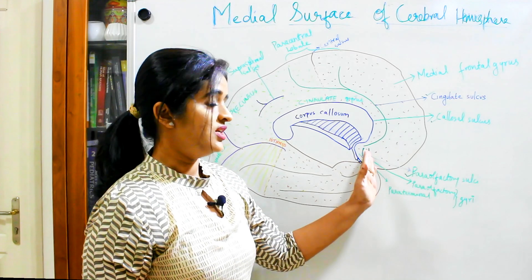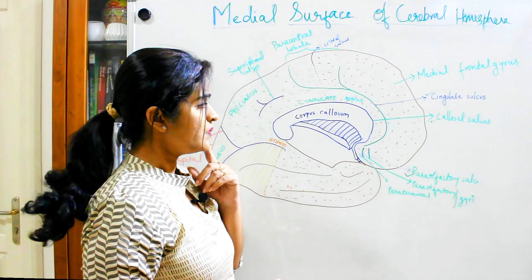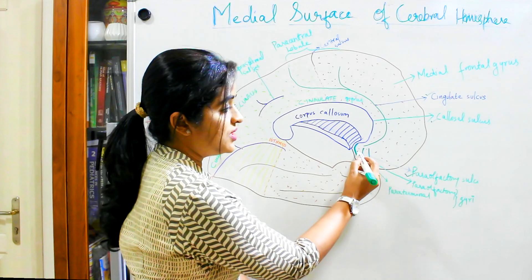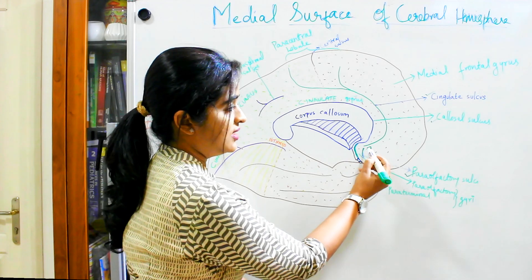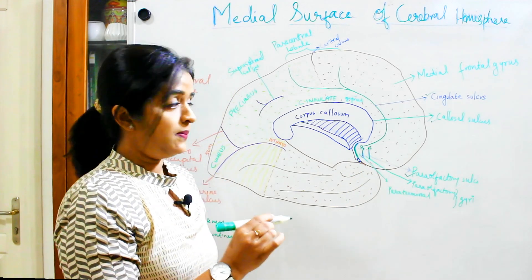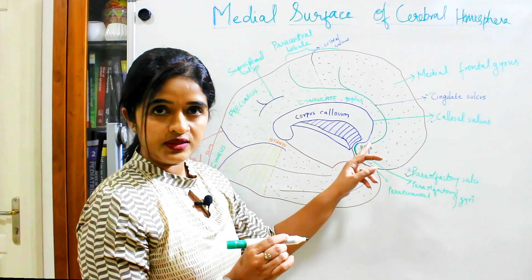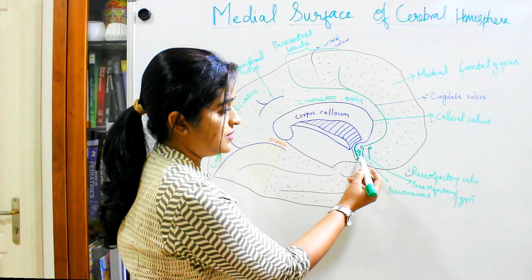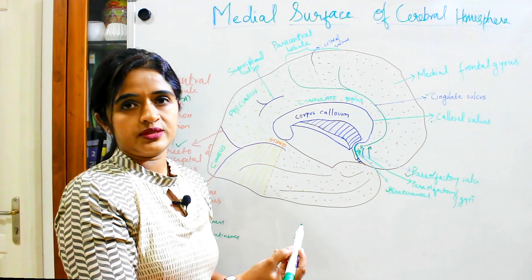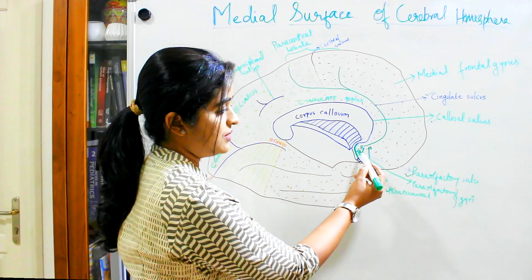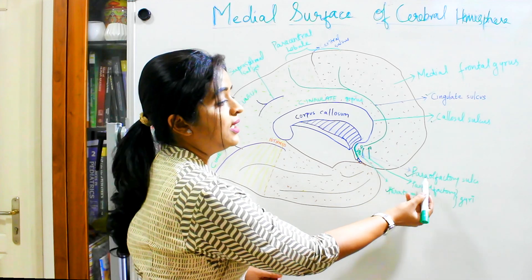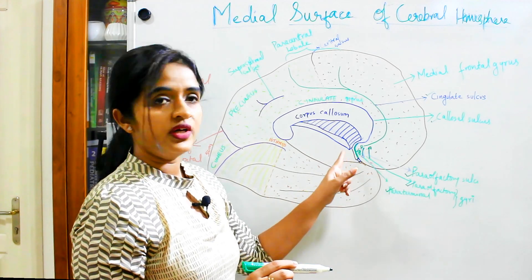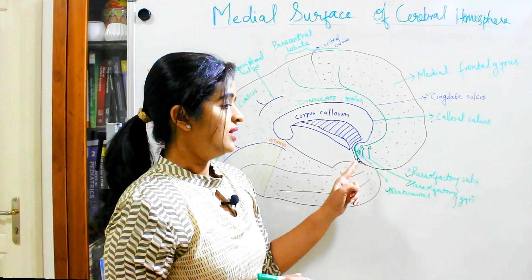Let's start with the anterior and posterior para-olfactory sulci. These are seen just in front of the lamina terminalis. Just in front of the lamina terminalis you can see the anterior as well as the posterior para-olfactory sulci, and this region is divided into two gyri. The one closer to the lamina terminalis is known as the paraterminal gyrus, and in front of it — between the anterior and posterior para-olfactory sulci — you get the para-olfactory gyrus.